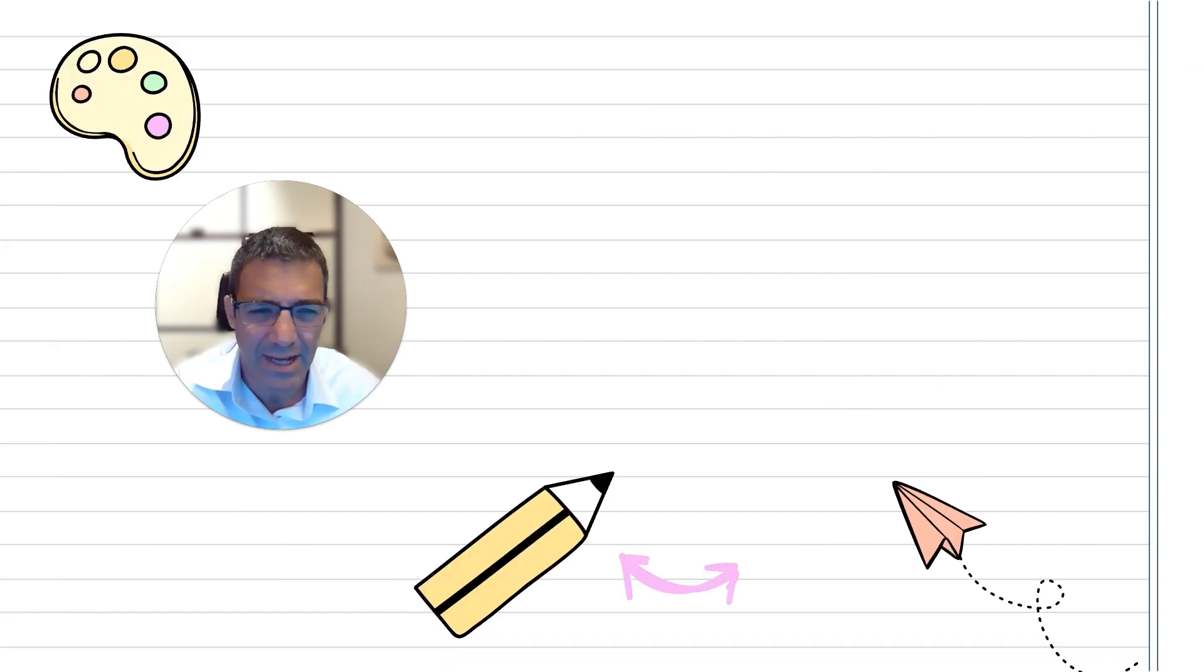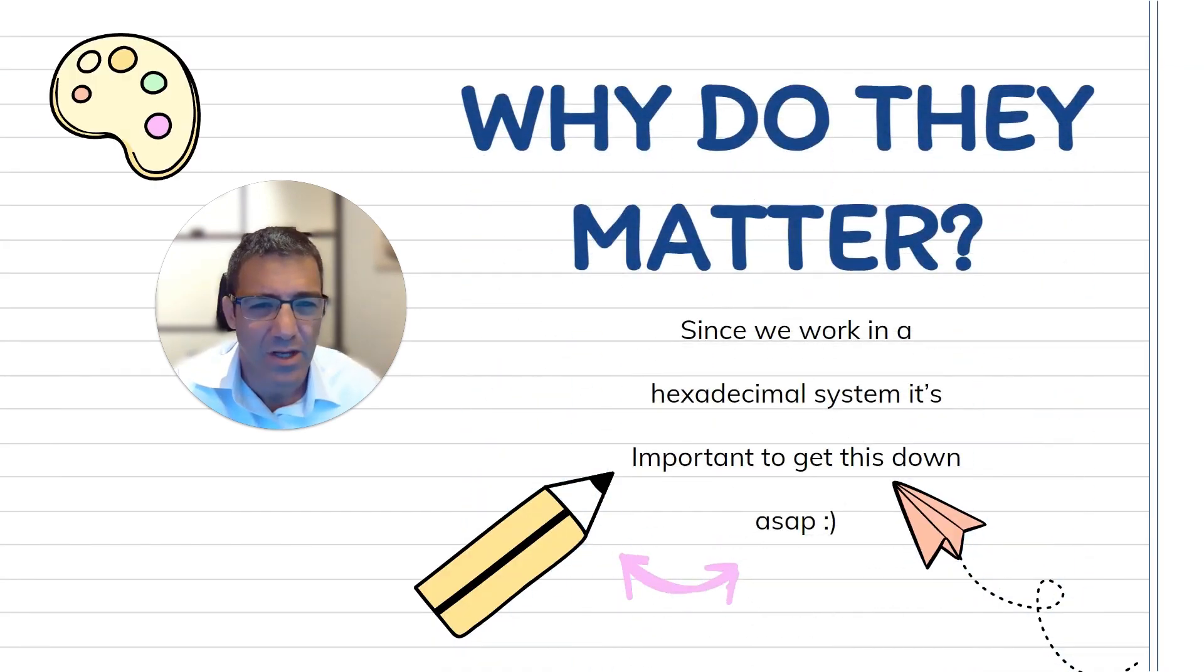But why do they matter so much? Well, simply speaking, we work in a hexadecimal system. We've decided as human beings to work in base 10. So it's very important that we know and that our children know how to get to the next block of 10. And so this will have to do with getting to the next block of 10, the block of 20, block of 100, block of 1,000. Once those quantities are clear in your mind, which they might not be for a first grader or second grader, then mathematics will become a lot easier.